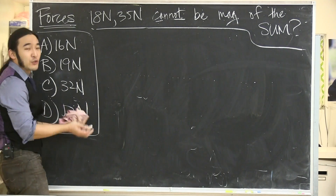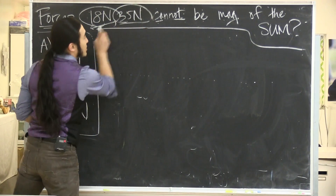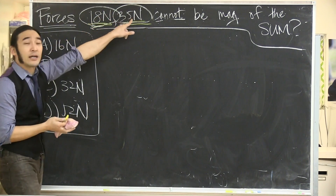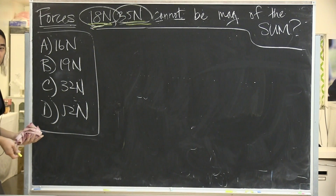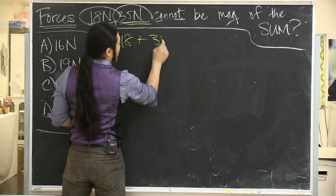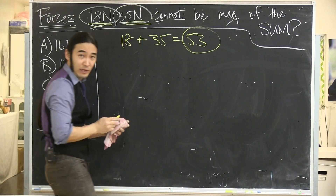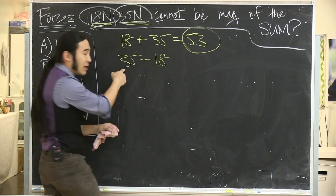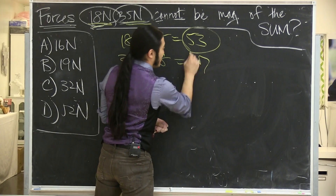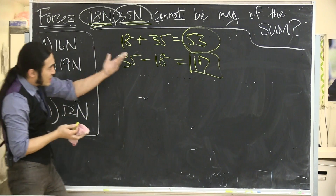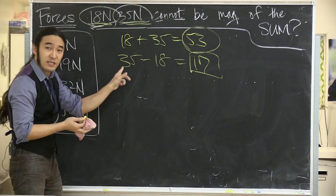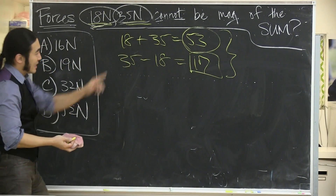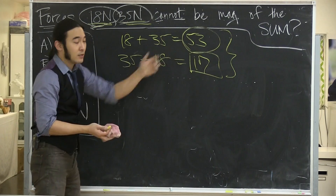The easiest way to frame this is to think extremes. Here's one push, here's another — let me switch up chalk. Think of it as me pushing with 18 and you pushing with 35. The very best we can do: we push together — 18 plus 35 gives 53. The worst we can do: we push against each other — you overpower me, but by how much? You beat me by 17. So best case is 53, worst case is 17, and anything in between is fair game.